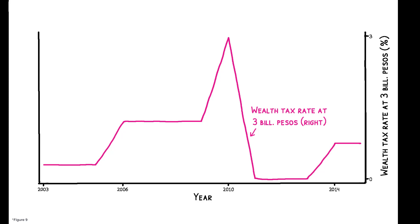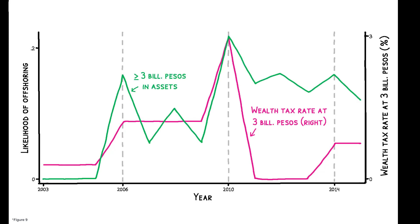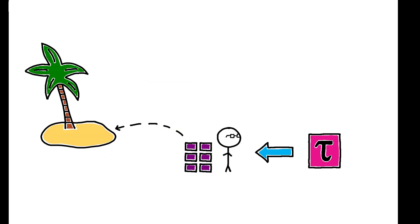Wealth tax hikes, such as those that occurred in 2006 and 2010, correlate with stark jumps in the share of ultra-wealthy Colombians offshoring to tax havens. Those not exposed to taxation offshore at lower rates and are fairly insensitive to tax increases. The authors confirm these patterns using their reform-induced tax variation and show there is a causal effect of wealth taxation on offshoring behavior.